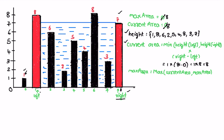Left is now pointing at the first index position and right remains at the last index position. We calculate the current area: minimum of both is 7 (at right), so 7 multiplied by right minus left, which is 8 minus 1, equals 7 times 7, equal to 49. Current area is 49. Max area is currently 8, so we replace it with 49.